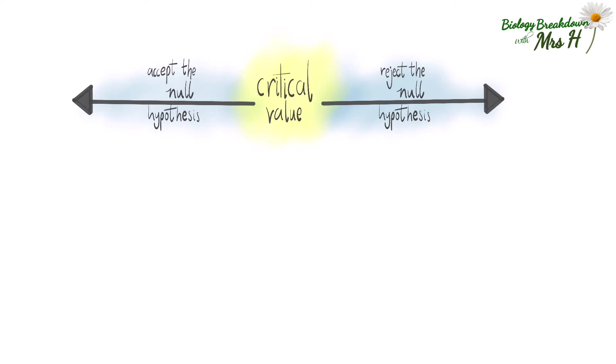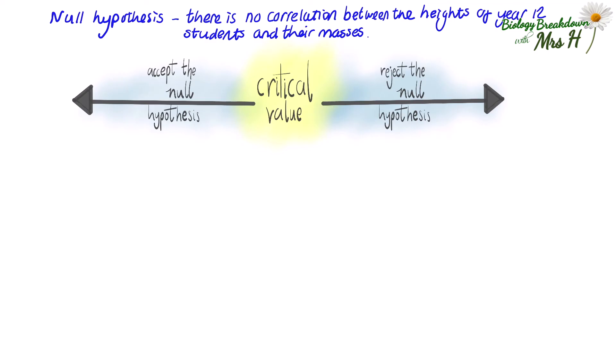To compare our Spearman's rank value to the critical value, we can use this diagram, which helps us to see whether we accept or reject the null hypothesis. The null hypothesis was there is no correlation between the heights of year 12 students and their masses. The critical value was 0.648 and our Spearman's rank correlation coefficient value is 0.955. As 0.955 is greater than 0.648, the null hypothesis is rejected and we can write a conclusion.